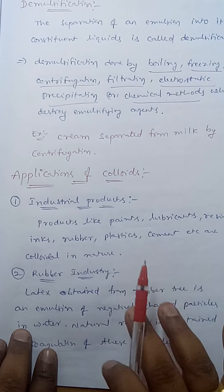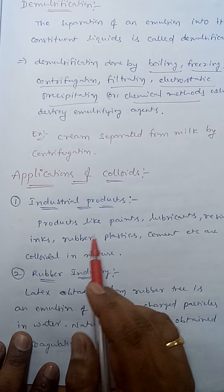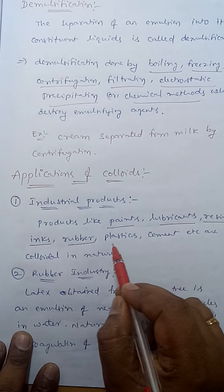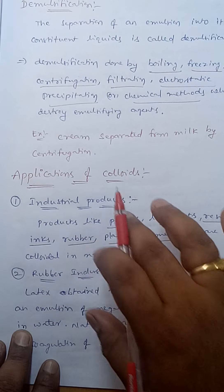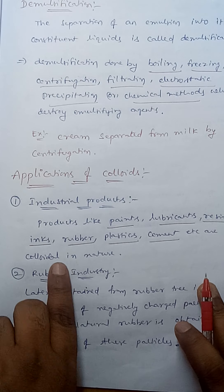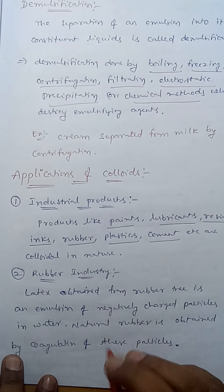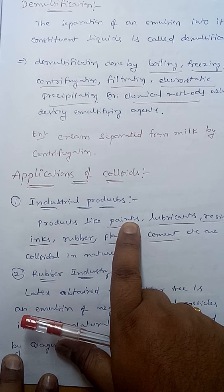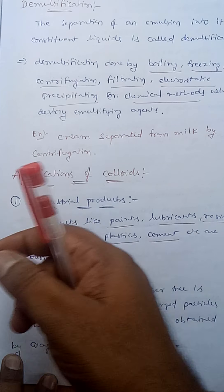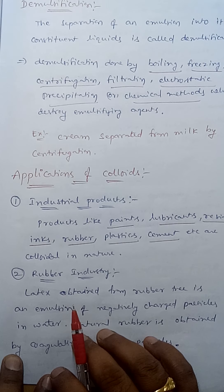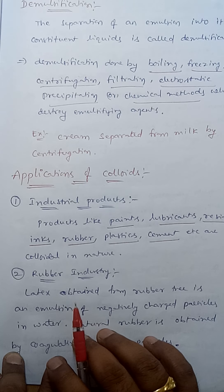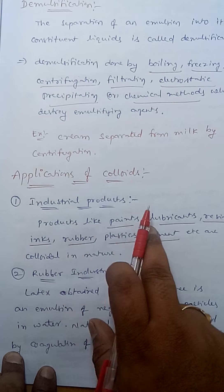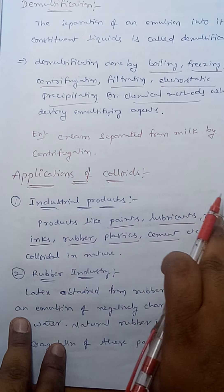Industrial products like paints, lubricants, resins, inks, rubber, plastic, and cement are all colloidal in nature. For paints, please follow the classification of colloids based on the physical state of dispersed phase and dispersion medium, where these different examples were discussed.